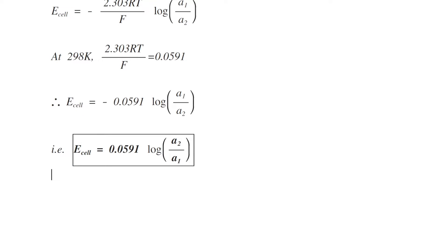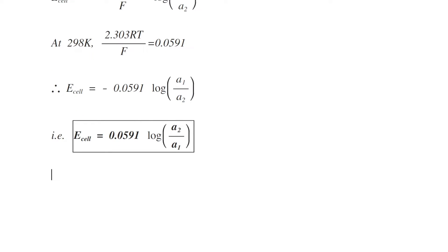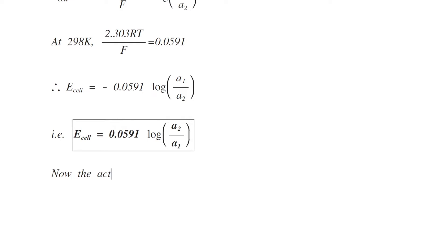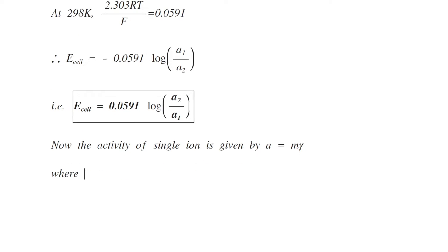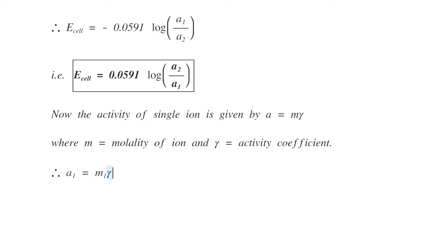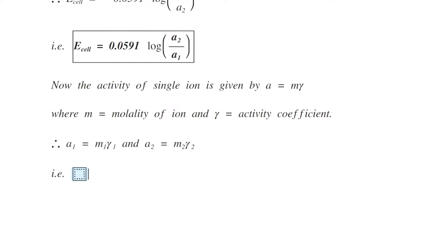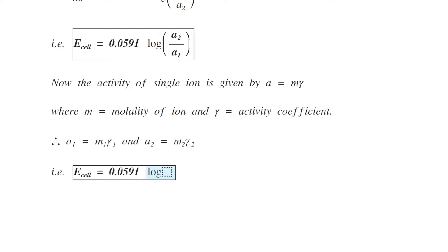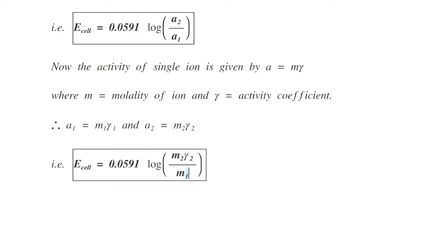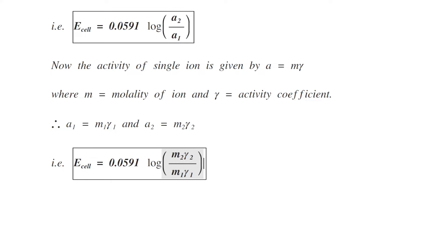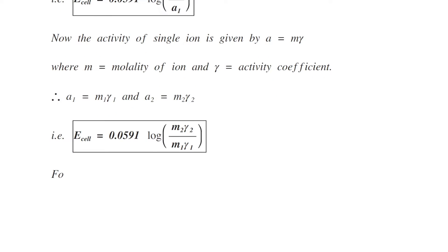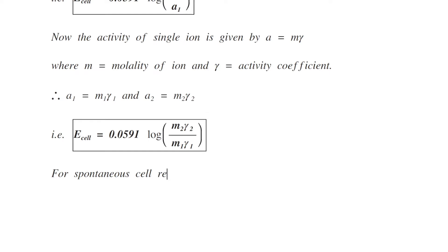This is the final Nernst equation for the EMF of the electrolyte concentration cell reversible to cation without transference. The activity of a single ion is given by A = M × γ, where M is the molality of the ion and γ is the activity coefficient. Therefore A1 = M1 × γ1 and A2 = M2 × γ2, giving E_cell = 0.0591 log(M2γ2 / M1γ1). For a spontaneous cell reaction, A2 must be greater than A1.